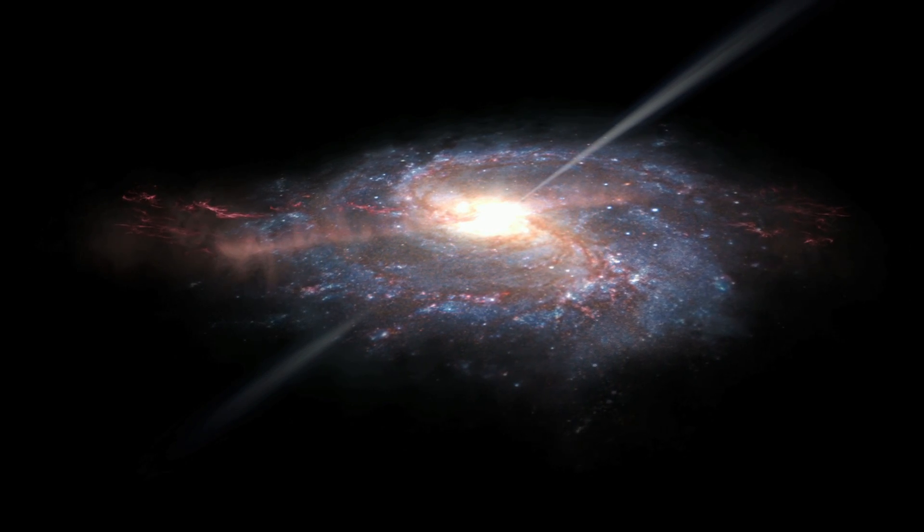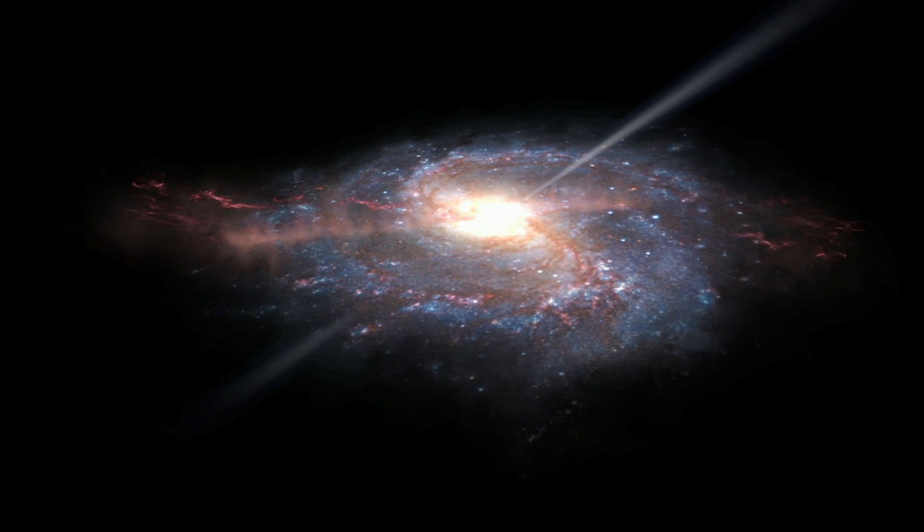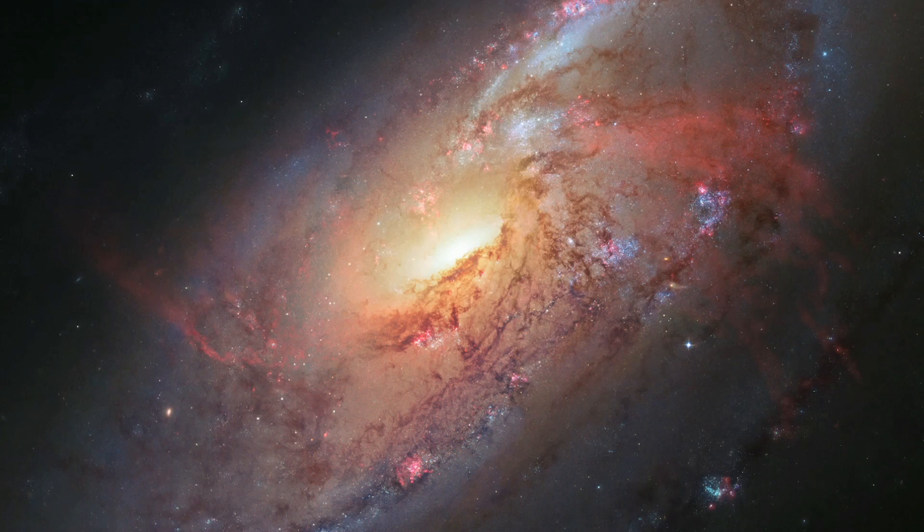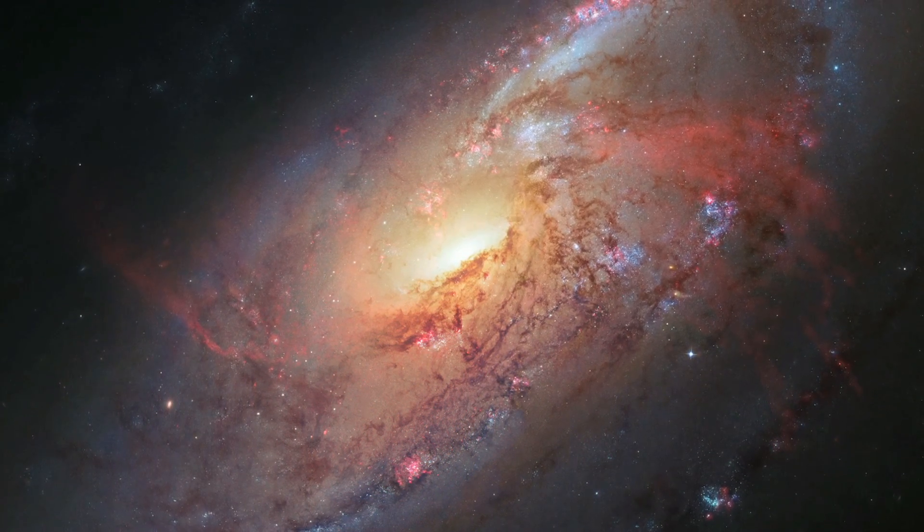However, the looser gas further out is blown away from the jets, so that it curves out of the galactic plane, creating the arching red arms seen in this image.